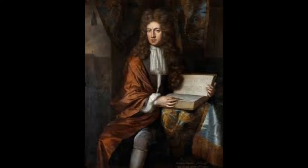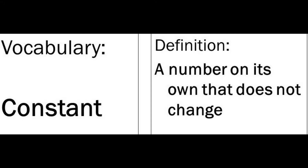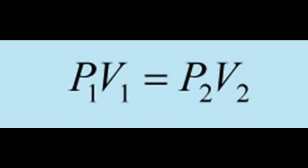First up, there is Boyle, dealing with pressure and volume. As volume increases, pressure decreases. Only if temperature and moles are constant. It's P1 times V1 equals P2 times V2. That's the formula for love.